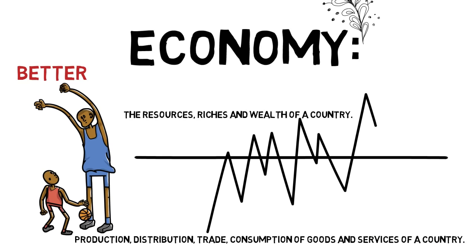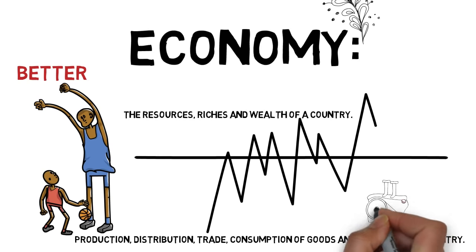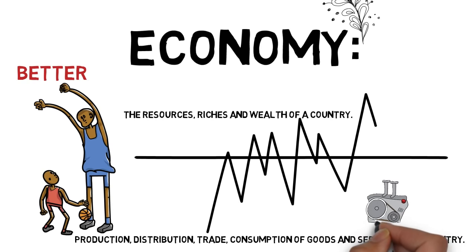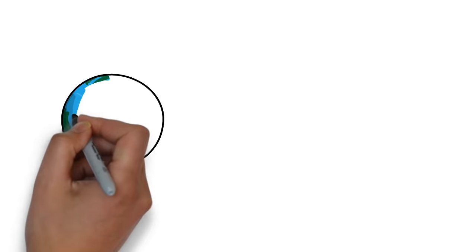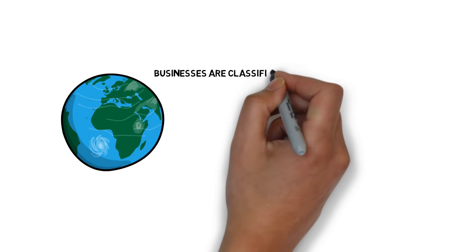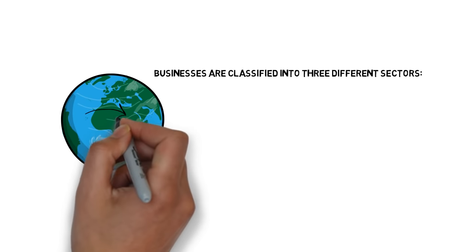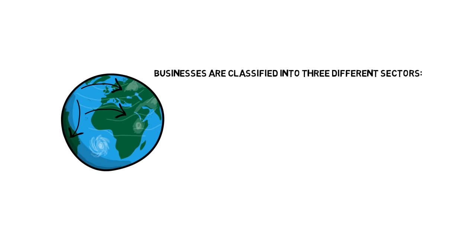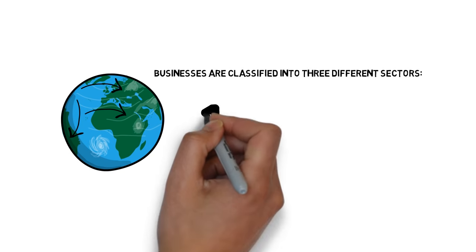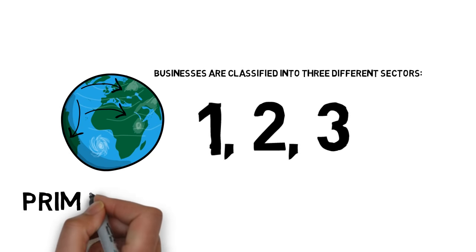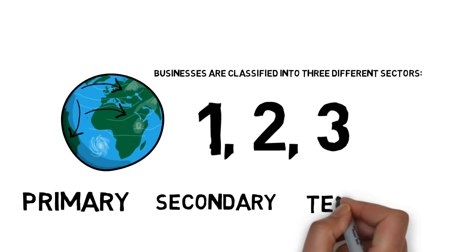It is all things a company produces and what we as customers or businesses sell or buy. In every country in the world, businesses are classified into three different sectors — whether you are in India, United States, United Kingdom, or United Emirates. All businesses are classified into three different sectors, and they are Primary, Secondary, and Tertiary.